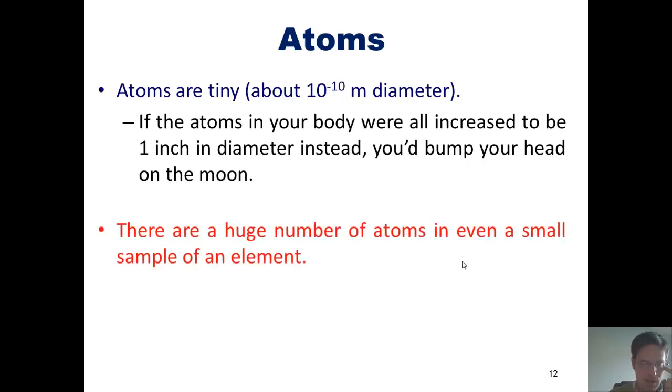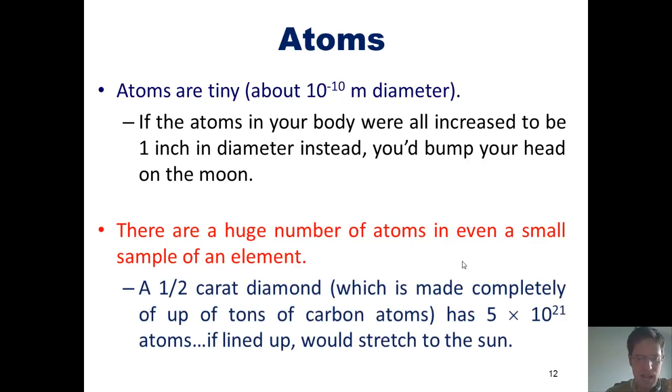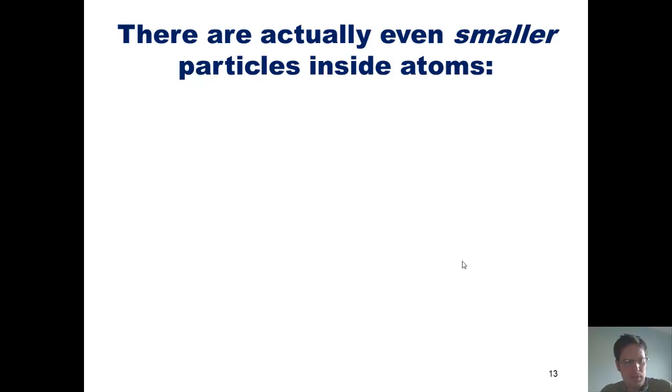As it turns out, there are a huge number of atoms in even a small sample of an element. For example, a one-half-carat diamond, which is made up primarily of nothing but zillions of carbon atoms, has 5 times 10 to the 21st atoms in it. If these atoms were all lined up in a single file line, even at their regular atomic size, that line would be so long that it would stretch all the way from the Earth to the Sun.